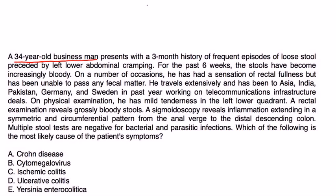Clinical vignette: A 34-year-old businessman presents with a three-month history of frequent episodes of loose stool preceded by left lower abdominal cramping. For the past six weeks the stools have become increasingly bloody. He travels extensively and has been to Asia, India, Pakistan, Germany, and Sweden. Physical exam shows mild tenderness in the left lower quadrant. Rectal exam reveals grossly bloody stools. Sigmoidoscopy reveals inflammation extending in a symmetric and circumferential pattern from the anal verge to the distal descending colon.